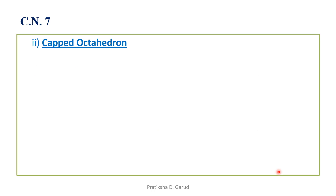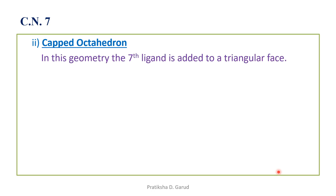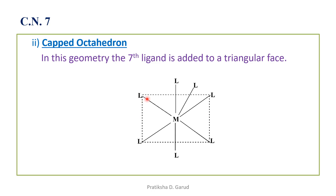The second geometry for coordination number seven is the capped octahedron. In an octahedron we have six ligands, so the seventh ligand is added to a triangular face of the octahedron. The structure shows an octahedron with one additional ligand capping a triangular face, hence it is called the capped octahedron.